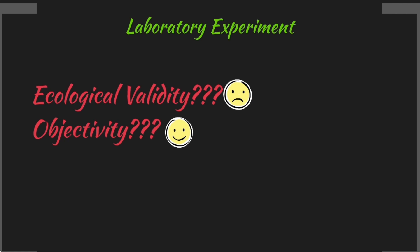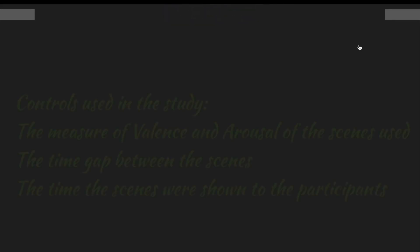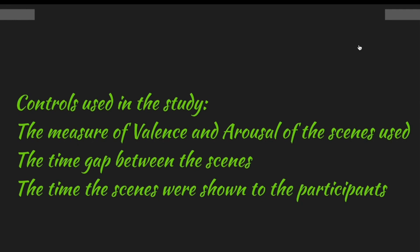How about controls used in the experiment? It increases the reliability of the experiment, any controls in general. Canli et al. have used a few controls, where they controlled the levels of arousal and valence of scenes that they chose. They made sure that they picked a certain range of valence and arousal, and then they showed these to all the participants that they used in the study. The same with the time gap between the scenes; they made sure that was the same across all the participants.